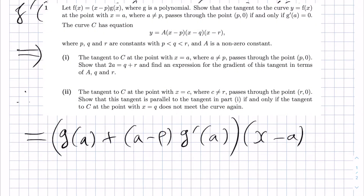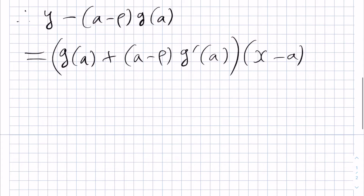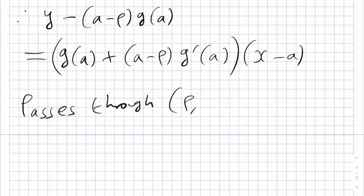In this part we want to show that this tangent passes through the point p, 0, if and only if g prime of a is equal to 0. We begin by taking the case that this tangent passes through p, 0, and then show that g prime of a equals 0, and then we'll do the other direction afterwards.